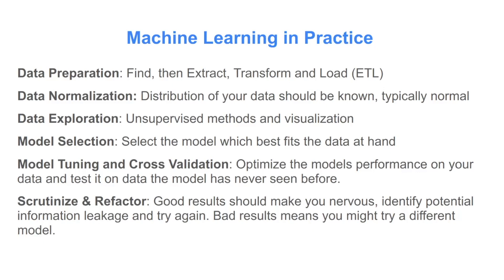The next phase is the data exploration phase. You can apply unsupervised methods and various visualization methods to get a sense of what's in your data and make sure you can account for various outliers. Finally, you'll need to select a model from the vast array available, train it, and make sure it generalizes to new data. One thing to note: you should always be nervous if your model is perfect or doing very well, because it's very likely cheating in some way, and you have to figure out how.